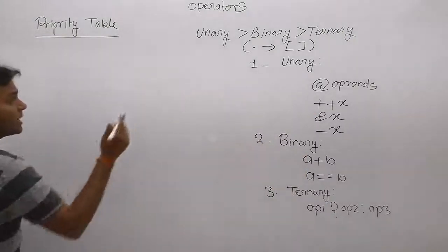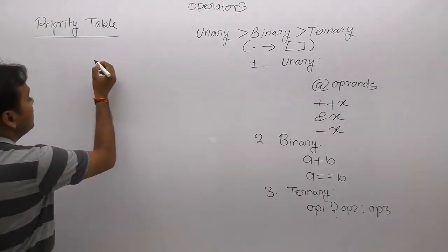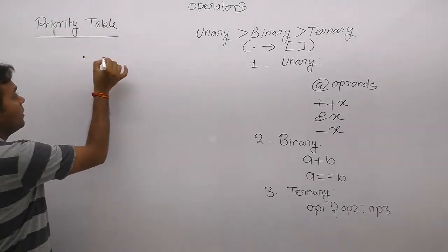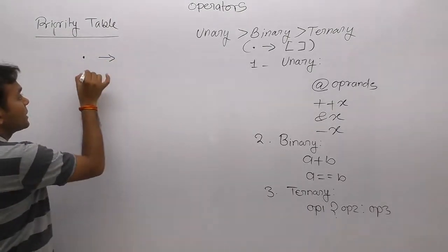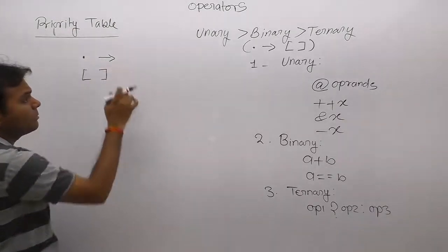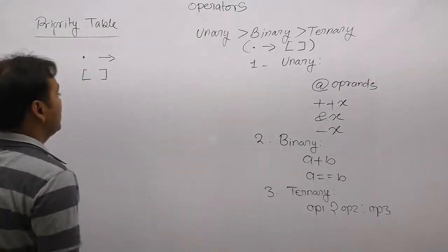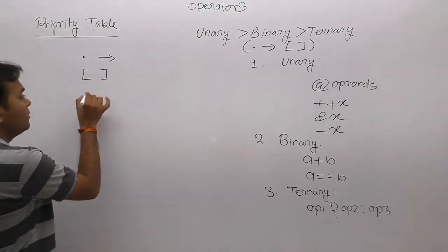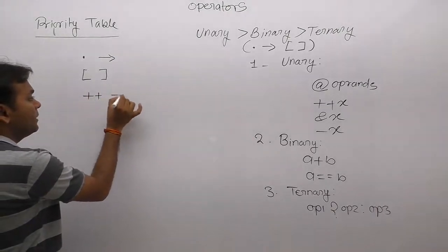This is an exceptional rule. In the priority table, the first highest priority is taken by the dot and arrow operators. Next, operators implemented on the same line have the same priority. Next highest priority is taken by unary operators — increment and decrement.